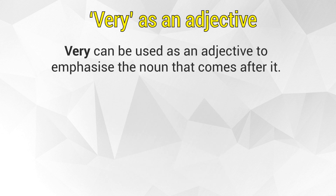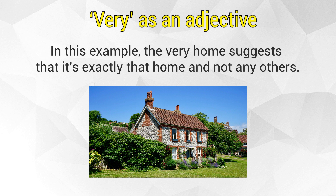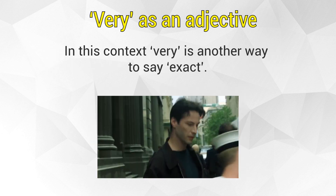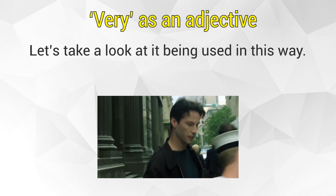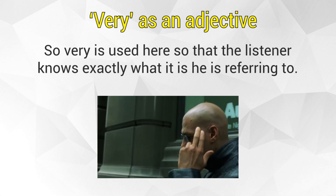'Very' can be used as an adjective to emphasize the noun that comes after it. For example: 'he was born in the very home he was raised in and died in.' Here, 'the very home' suggests it's exactly that home and not any others. In this context, 'very' is just another way to say 'exact'. So in 'the very minds of the people we are trying to save', 'very' is used so the listener knows exactly what is being referred to.